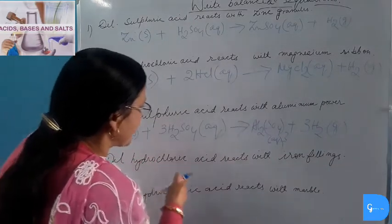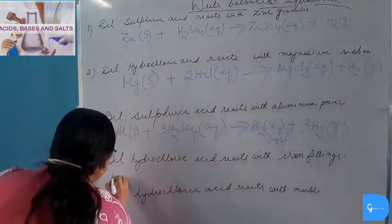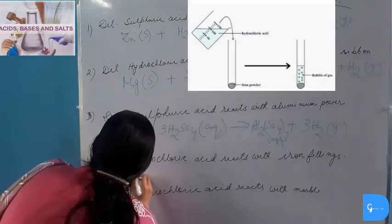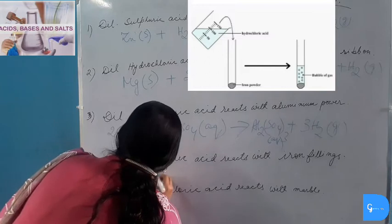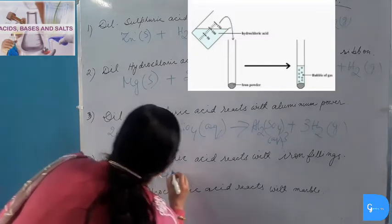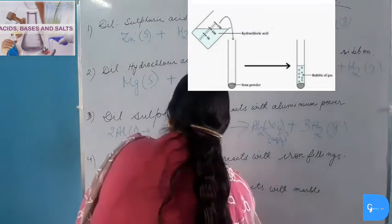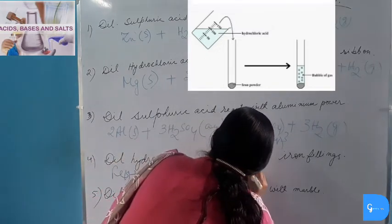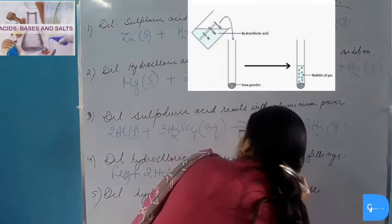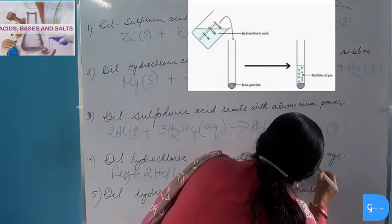Dilute Hydrochloric Acid reacts with Iron Filings — Ferrous Iron: Fe(s) + 2HCl(aq) → FeCl₂ (Ferrous Chloride, aqueous) plus Hydrogen gas is evolved.